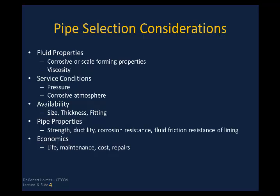Then there's service conditions: what kind of pressure are you going to encounter? Is the atmosphere going to be corrosive? How about the availability of what you're buying — the pipe you're specifying in terms of size, thickness, and fittings? Can you get it readily available where the cost is not prohibitive to truck it a long way to your building location? How about the pipe properties: strength, ductility, corrosion resistance, friction resistance, and lining? Here in the lab at the campus, we've been doing some testing for a pipe manufacturing company, trying to nail down the effective roughness of the pipe itself.